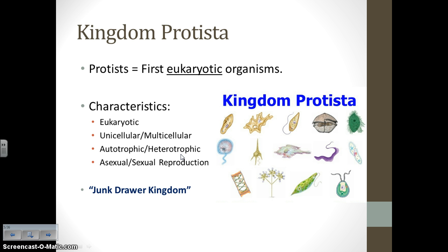The very first eukaryotic organisms, scientists think, were some sort of protist — a very simple organism that had a nucleus but not a lot of complicated organelles. We think protists were the first eukaryotic organism, so that's the kingdom we're going to start with. All protists are eukaryotic. Do not think that because they start with 'pro' they are prokaryotic. The only prokaryotic organism is bacteria. Protists are not bacteria, so they are eukaryotic.